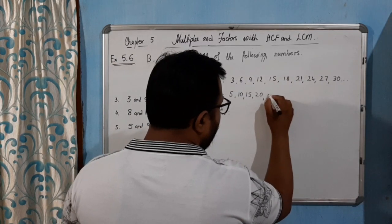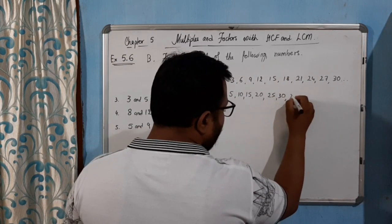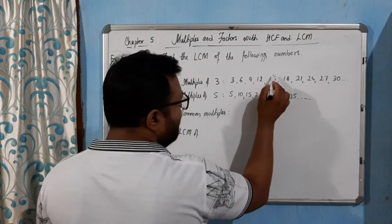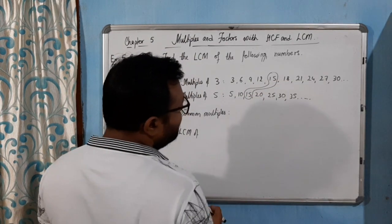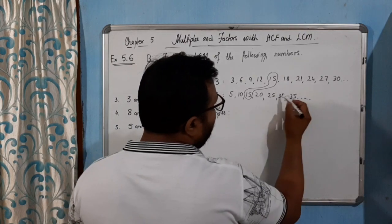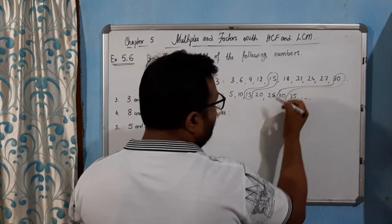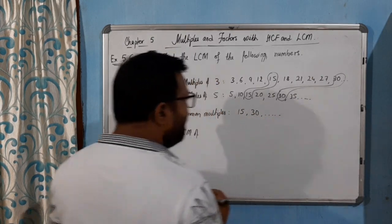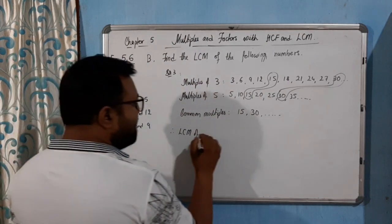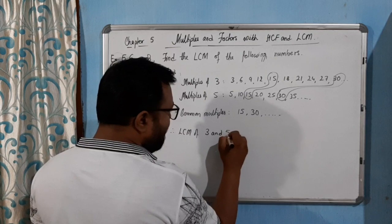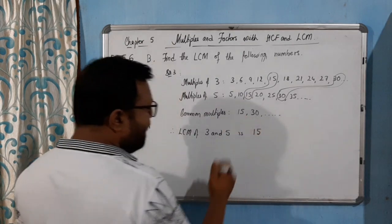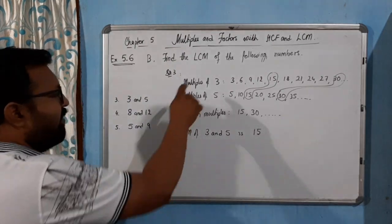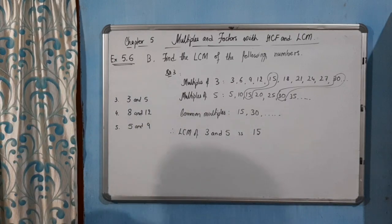Continuing: five times four is twenty, five times five is twenty-five, five times six is thirty. We got the second common multiple too. The common multiples of three and five are 15, 30, and so on. So the LCM of three and five is 15, because 15 is the smallest, or lowest, common multiple of three and five. Is that clear? Now welcome to the next part.